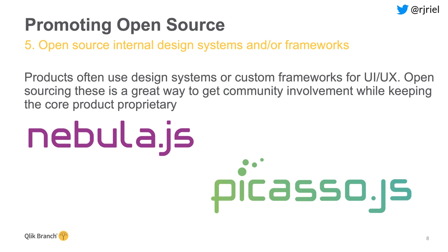Products often have design systems or custom frameworks to accomplish UI or UX tasks that don't give away the company's secret sauce. Open sourcing these design systems or frameworks is a great way to get the community involved while keeping the core product proprietary. At Qlik we have Nebula.js, a framework-agnostic framework for grabbing data from our engine and putting it into a visualization. We also have Picasso.js, a design system for our visualizations. Both have been open sourced so the community can use them in their own extensions and visualizations.